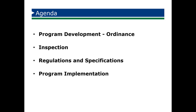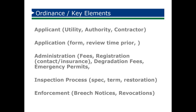The next part we'll talk about is inspections. After you have the ordinance in place, there needs to be an inspection program that needs to be managed. We have rules, regulations, and specifications that we'll talk about as well as part of that inspection process. And lastly is the program implementation. Sometimes this can be the hardest part — getting this program off the ground. But if you think through it thoughtfully and really put the time into getting all the players involved, it can make it run that much smoother. So those are the four areas that we're going to talk about.